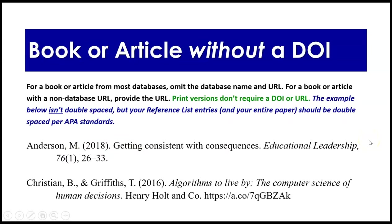For a book or article without a DOI from most databases such as ProQuest and EBSCO, you want to omit the database name and the URL. It simplifies things — you treat it just like a published article on paper. For a book or article with a non-database URL, provide the URL. Print versions, of course, don't require a DOI or URL because they are actual paper and don't exist online.